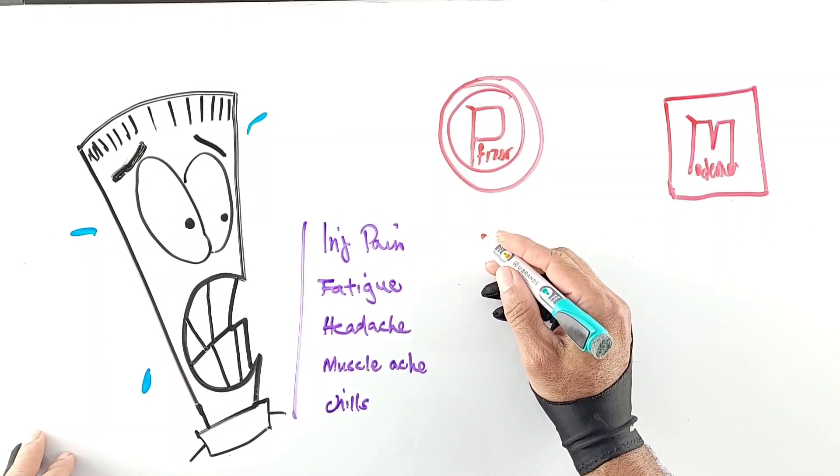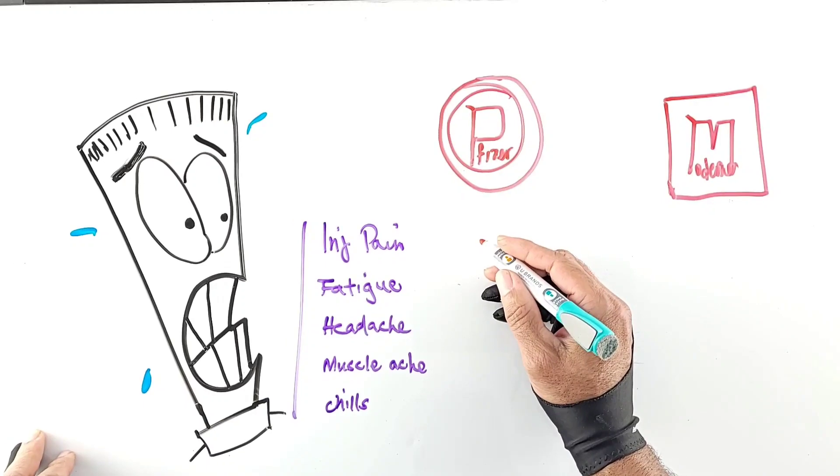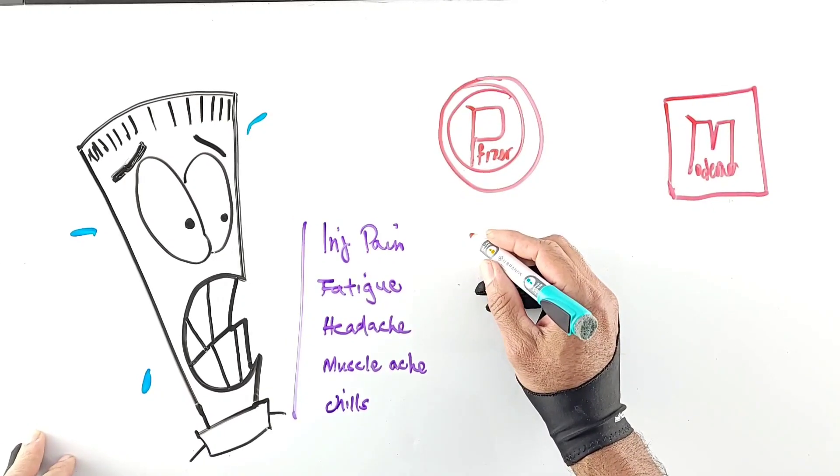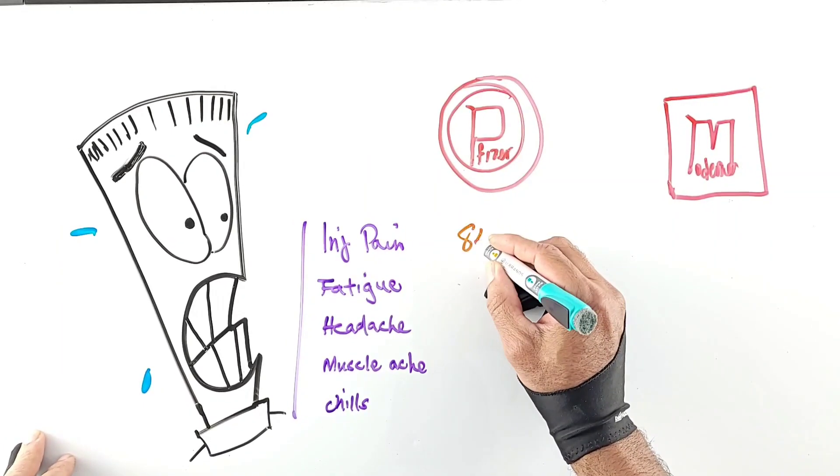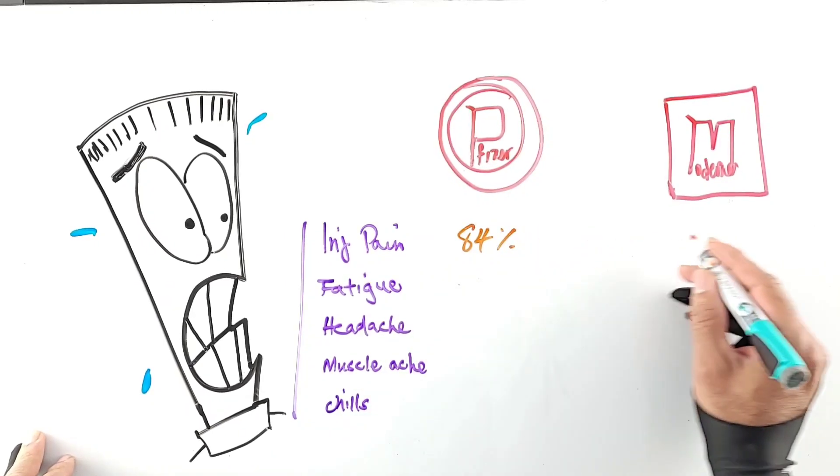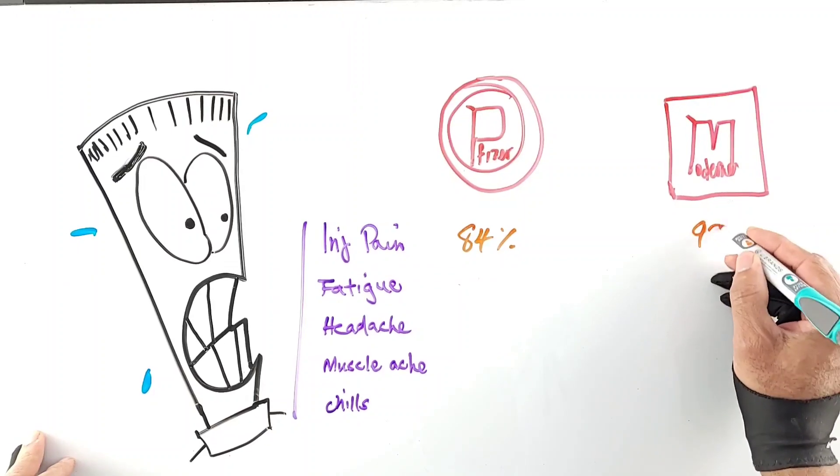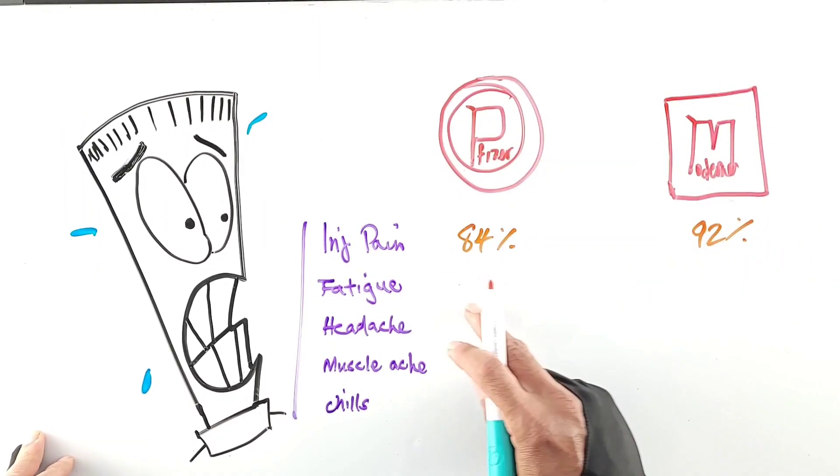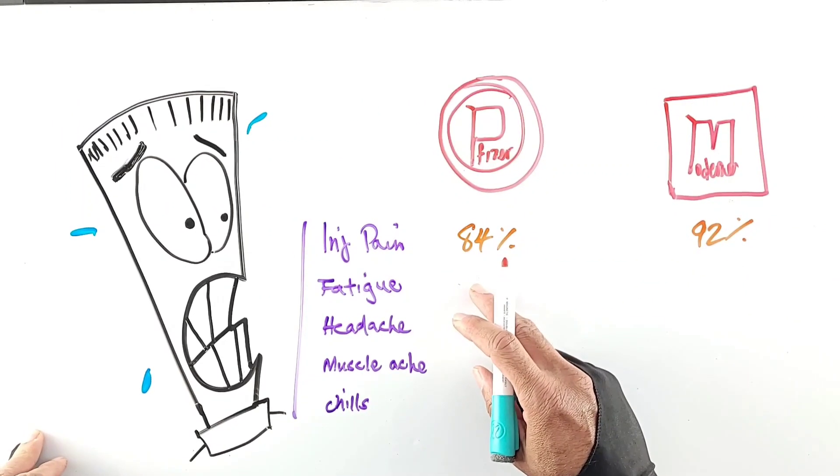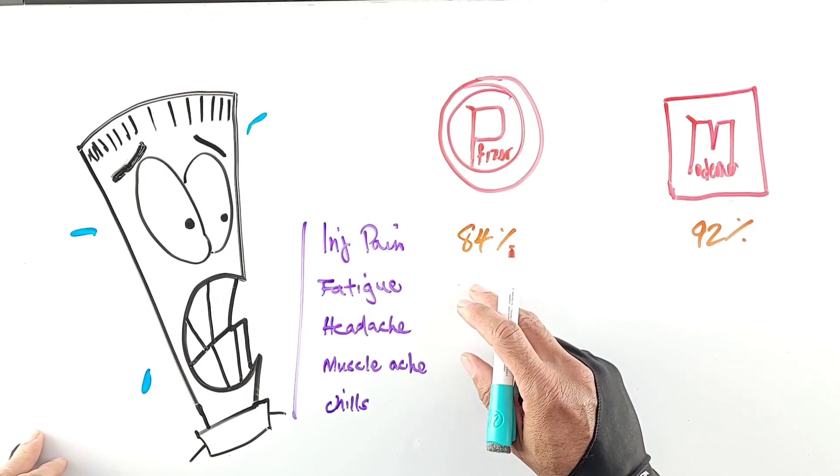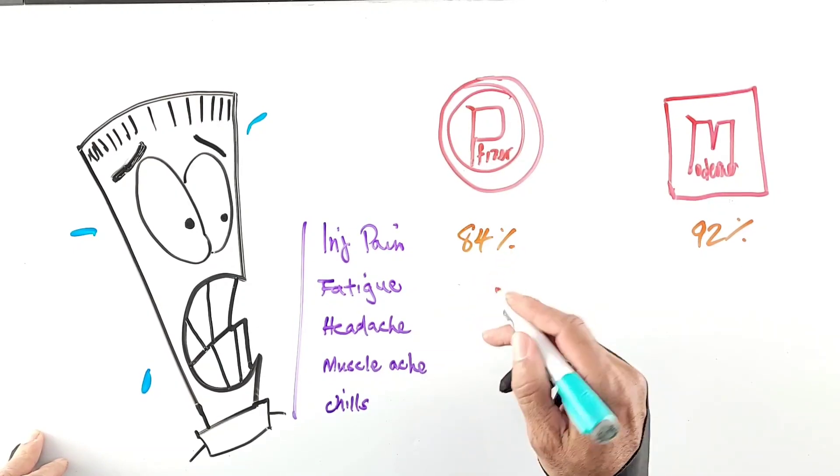For Pfizer that came out at 84 percent, for Moderna it was reported in 92 percent of takers. For tiredness after the injection, that in Pfizer was listed in 63 percent of takers